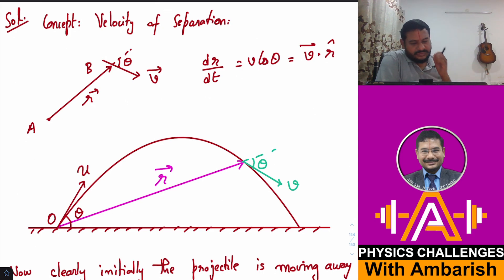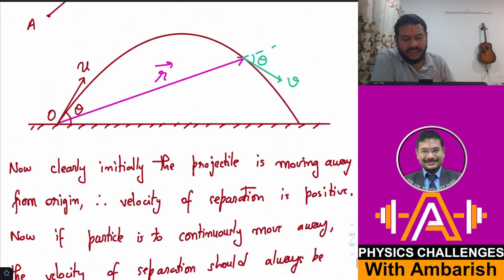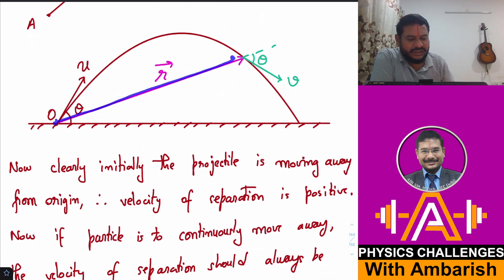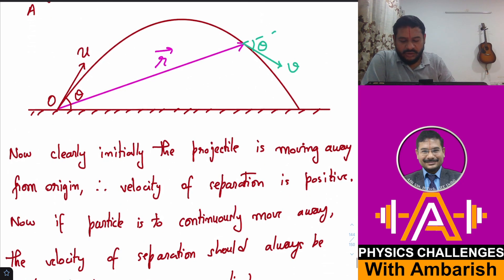Let's say instantaneous position vector is r⃗ and the instantaneous velocity vector is v⃗. If the particle is always moving farther from origin without any maxima or minima, then the velocity of separation should always be positive at every instant of time. Initially the projectile is moving away from the origin, so the distance from the origin is increasing.